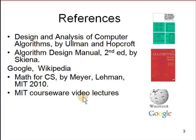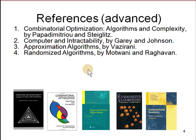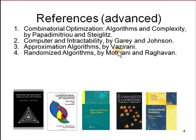There are some advanced references: Combinatorial Optimization, Algorithms and Complexity by Papadimitriou and Steiglitz; Computer and Intractability by Garey and Johnson, which covers NP-completeness; Approximation Algorithms by Vazirani; Randomized Algorithms by Motwani and Raghavan; and a book on Computational Geometry by de Berg, which we'll cover if we get more time.